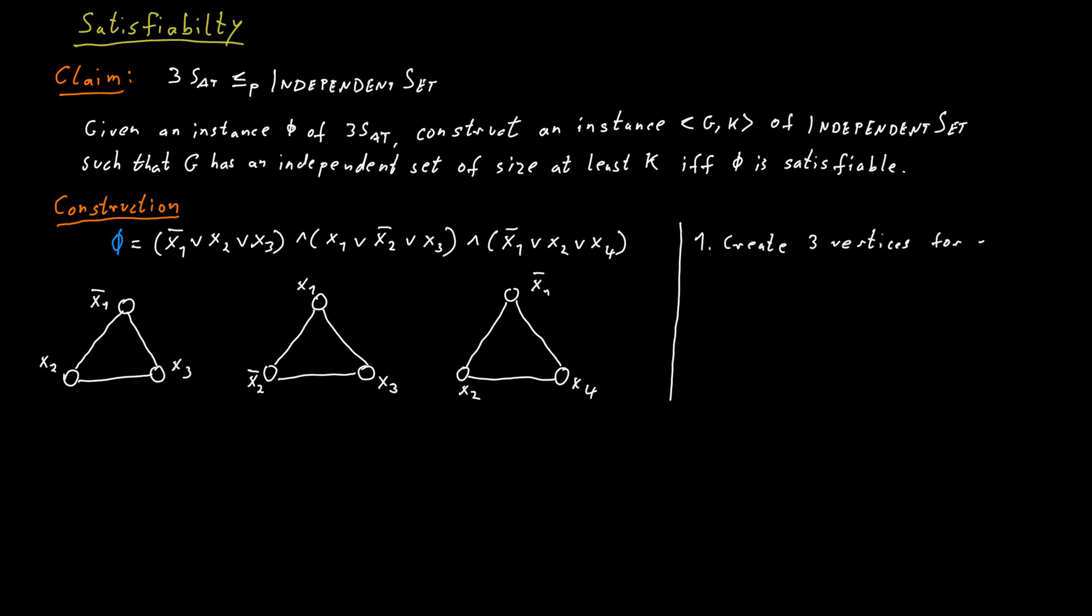Next, we want to ensure that the choices of our selection are consistent. So for example, in the first clause, I have the variable x2. And then in the second clause, I might have the negation of x2. What I don't want to happen is that we somehow select a vertex that belongs to x2 and also select a vertex that belongs to not x2. Because intuitively, the meaning of this would be that we set x2 to true, but also set the negation of x2 to true at the same time. Of course, that's not possible.